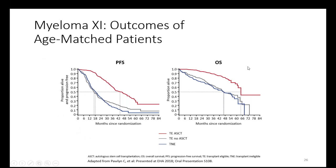Importantly, when you look at outcomes of age-matched patients who either did or didn't undergo a transplant, it's clear that as long as you got to a transplant, independent of your age, you did better — both in progression-free survival and overall survival. Transplant is still a very important treatment modality for patients. If we can get them there and think they'll tolerate it, this study shows it provides benefit.